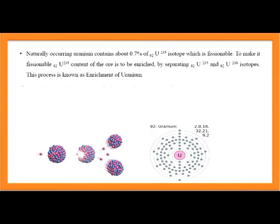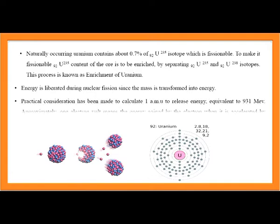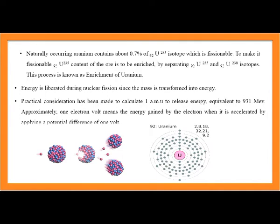Energy is liberated during nuclear fission as mass is transformed into energy. One atomic mass unit releases energy equivalent to 931 MeV. One electron volt is the energy gained by an electron when accelerated by a potential difference of 1 volt.